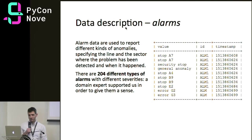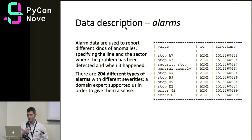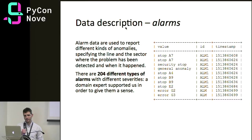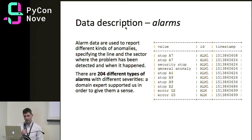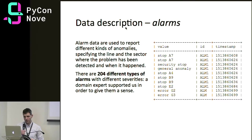Looking at the data: alarm data report different kinds of anomalies. We can get the exact timestamp when the problem occurred and the line and sector where it was detected. There are more than 200 types of alarms, and we needed the help of a domain expert to decode all the different types.